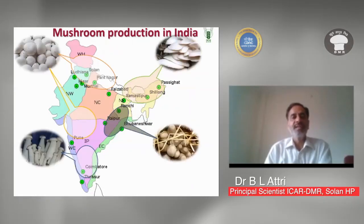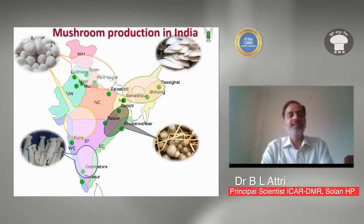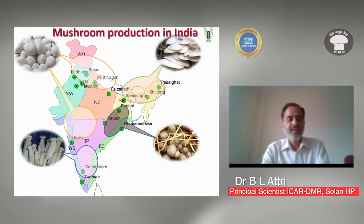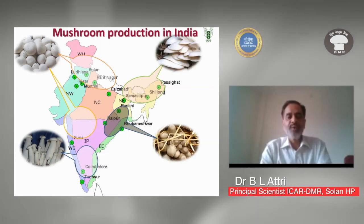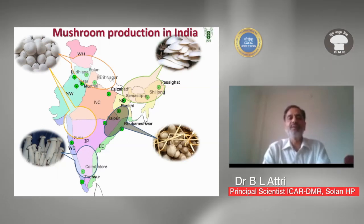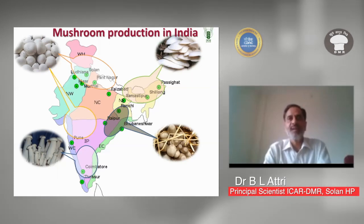Within India, the northern part is dominated by white button mushroom, including Maharashtra. The central part is dominated by oyster mushroom, the southern part by milky mushroom, and the coastal area by paddy straw mushroom. Shiitake mushroom has been taken up on a very small scale in the northeastern states like Assam, Manipur, and Meghalaya.